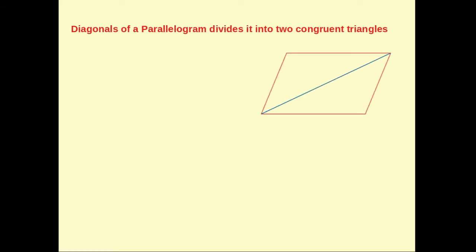Let us prove this logically. ABCD is a parallelogram in which AB is parallel to CD and AD is parallel to BC. Here AC is a transversal.